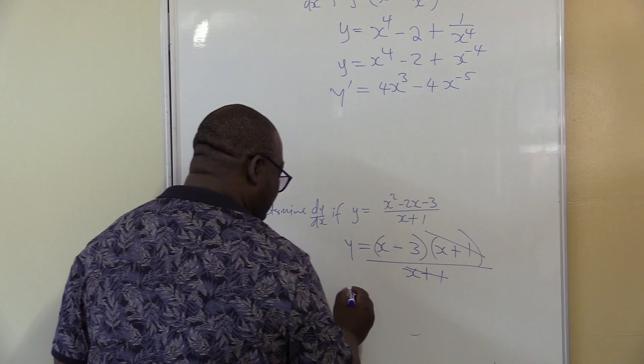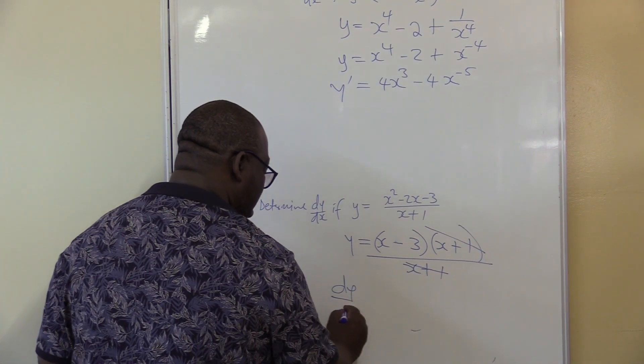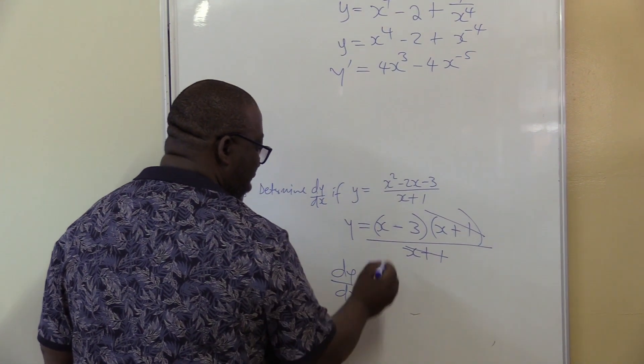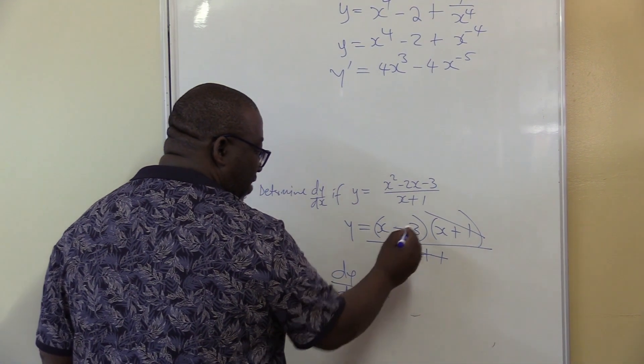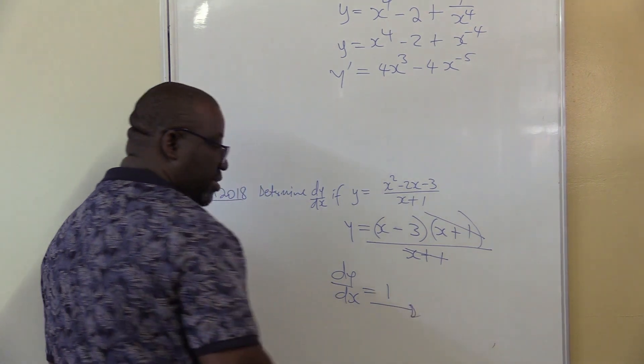That goes with that. Now I can find dy over dx here, dy/dx. If I differentiate x, it will be 1. If I differentiate constant, it will be 0.